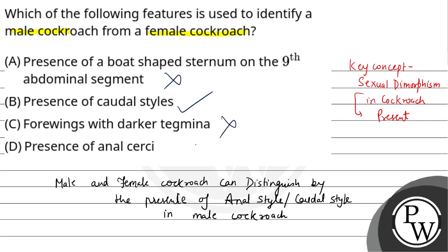4 wings jo hain, woh dark color ke hote hain male aur female dono mein hi. Aur anal cerci bhi dono mein present hai. So, the finally correct answer is only Option B. Hope you understood it well. Best of luck.